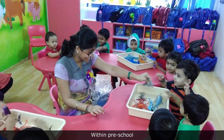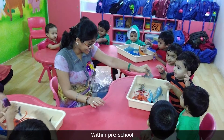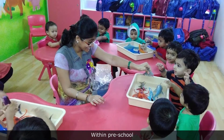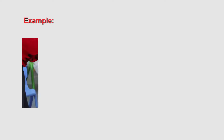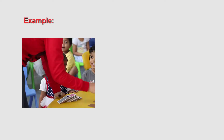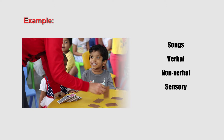Children's individual needs must be met and they should be helped to successfully transit from one concept to another. For example, a child with a learning difficulty may need a different cue to transit from one activity to another. The educator can use songs, verbal, non-verbal, sensory and visual cues to help transit smoothly.